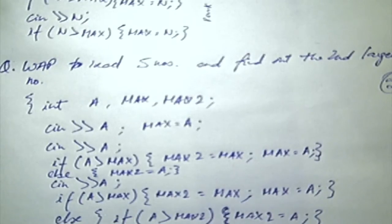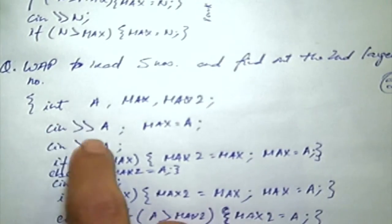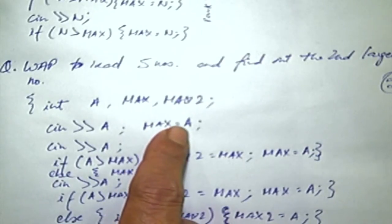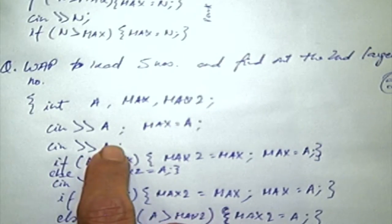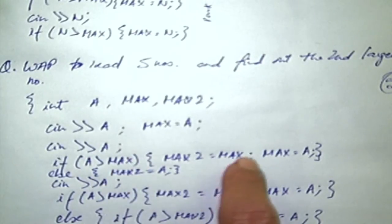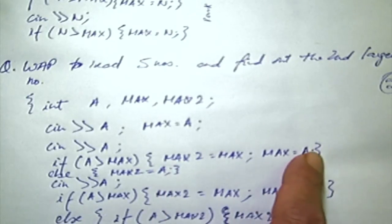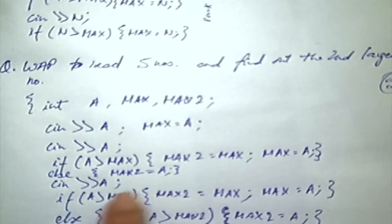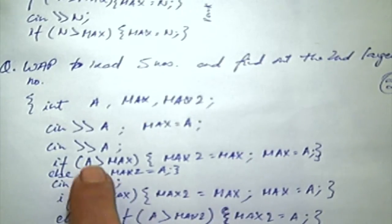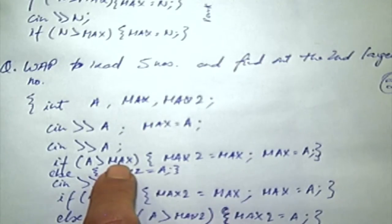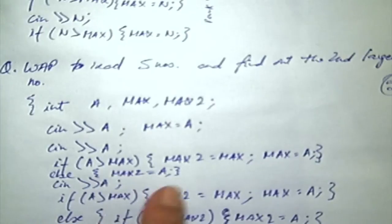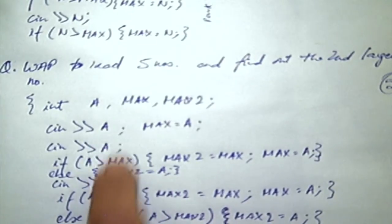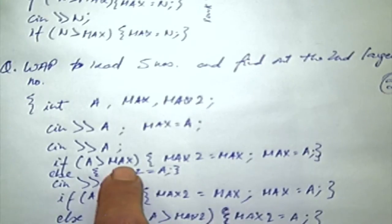He is reading one number and assigning it to max. Then he reads another number. If A is greater than max, then he puts the previous value of max into max two and assigns the new value to max. So far he has read two numbers and they are put properly in max and max two. There is an else clause: if A is not greater than max, max is greater, and the value of A must go into max two. So it is these statements which complete the initial assignment of max and max two.